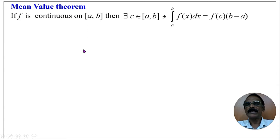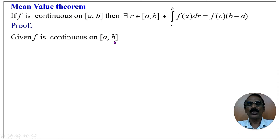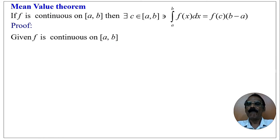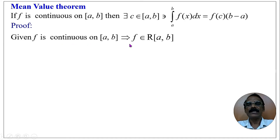We shall now prove this statement. We are given that the function f is continuous on the closed interval [a, b]. We know that every continuous function on the closed interval [a, b] is Riemann integrable on [a, b]. Therefore, f belongs to R of [a, b], that is, f is Riemann integrable over the closed interval [a, b].